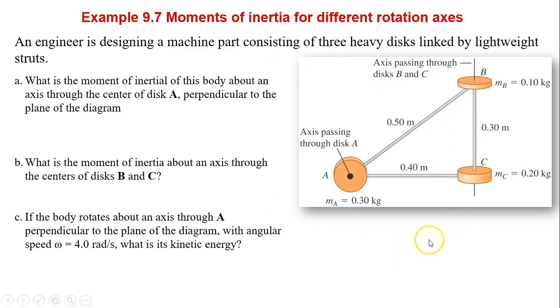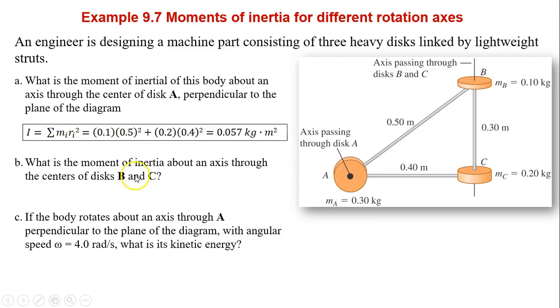But what is RA? RA equals 0 because there is no RA. So it's just MB times RB squared plus MC times RC squared. That is the moment of inertia around axis A.